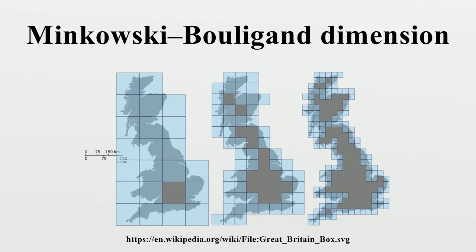The Hausdorff measure, by comparison, is countably additive. An interesting property of the upper box dimension, not shared with either the lower box dimension or the Hausdorff dimension, is its connection to set addition. If A and B are two sets in a Euclidean space, then A + B is formed by taking all pairs of points (a, b) where a is from A and b is from B, and adding a + b.